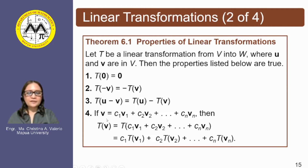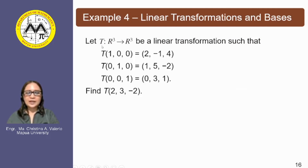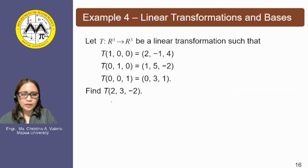Number four: if v equals c₁v₁ + c₂v₂ + ... + cₙvₙ, that is if v is a linear combination of vectors v₁, v₂, ..., vₙ with scalars c₁, c₂, up to cₙ, then the transformation of vector v equals the transformation of that linear combination. Let T be a function that maps R³ into R³ via linear transformation. We want to find the image of the vector with components 2, 3, and −2, so we need to find the value of c₁.